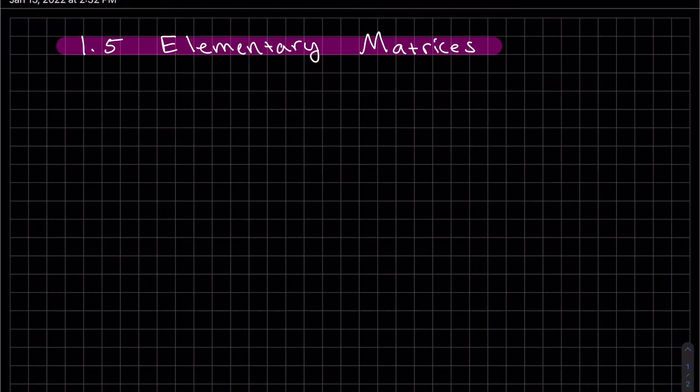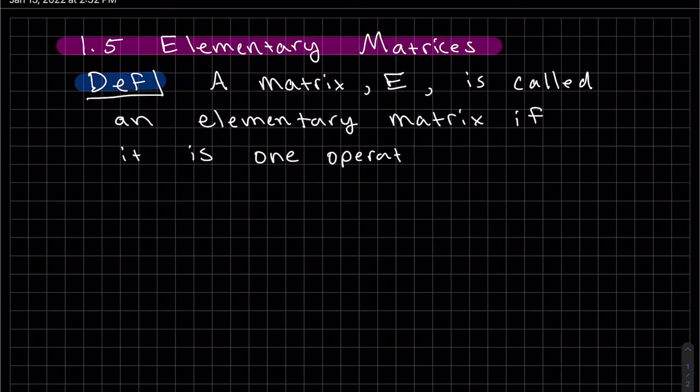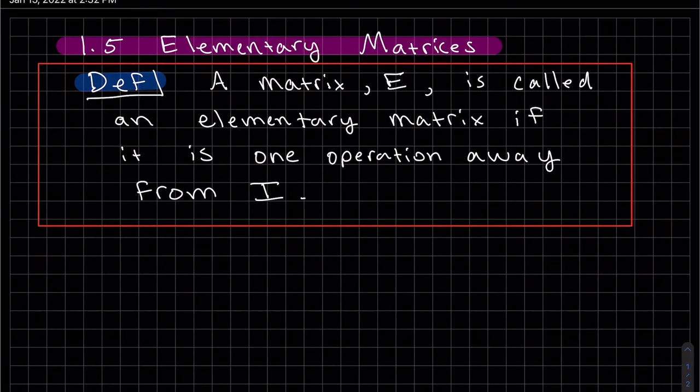Okay, so this is the section on elementary matrices. Let's start off with the definition. A matrix, which we'll call E, is called an elementary matrix if it is only one operation away from the identity matrix I.